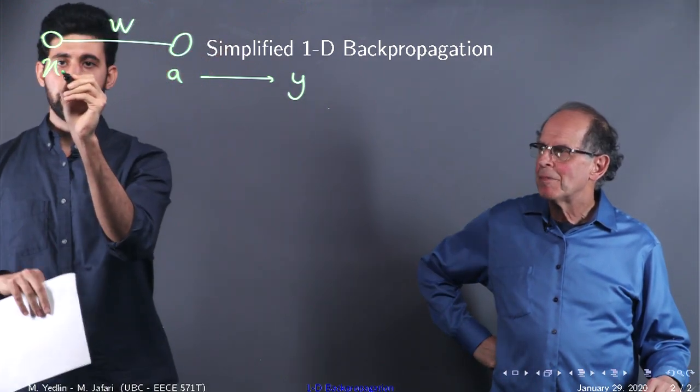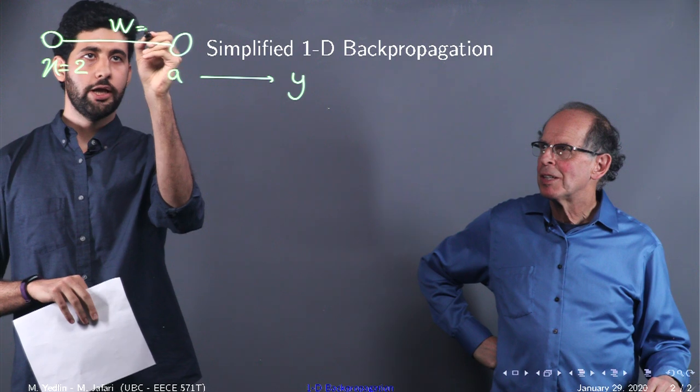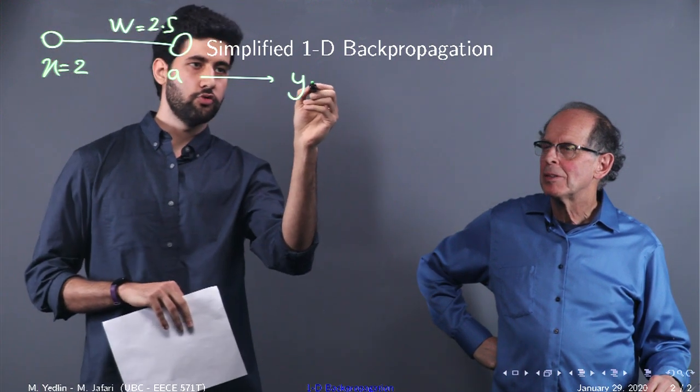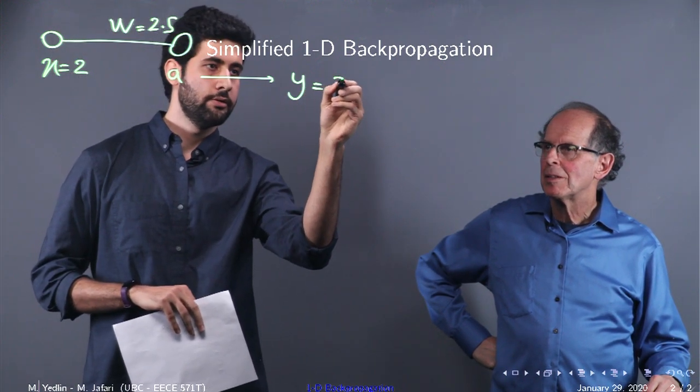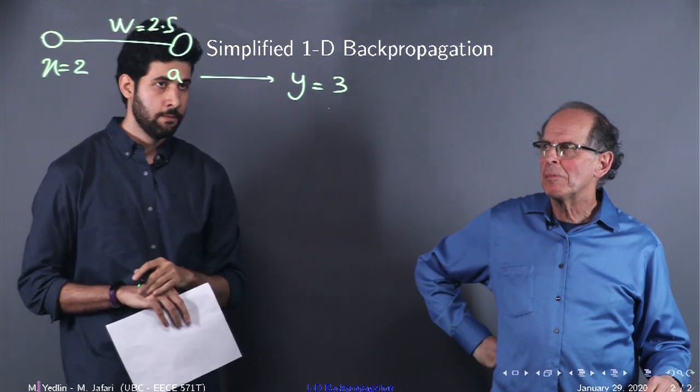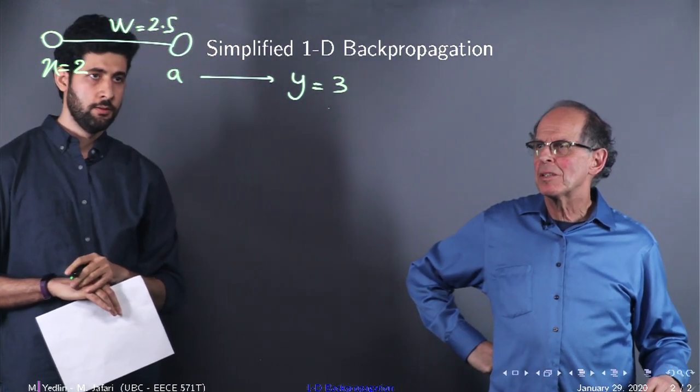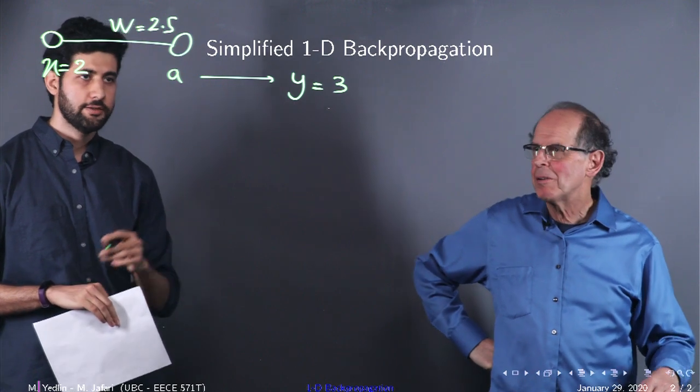So assume this one is, for example, 2, this one is 2.5, and this one should be, I don't know, 3. So we want to pick, somehow, get a W that will move us to the output equal to 3. Exactly.